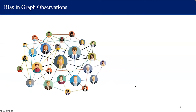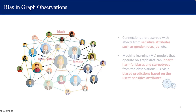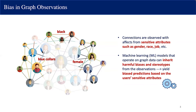Graph-structured data is everywhere in our world, such as social networks or protein structures. Let's take an online social network as an example where users are connected with each other as friends. Users in this network are associated with some protected sensitive attributes such as the user's gender, race, or job. These sensitive attributes can affect the observed connections among users. If we directly apply machine learning methods on such graph data, the models can inherit undesired bias and stereotypes about the sensitive attributes, which will in turn make biased predictions based on these sensitive attributes.